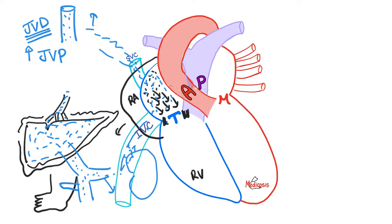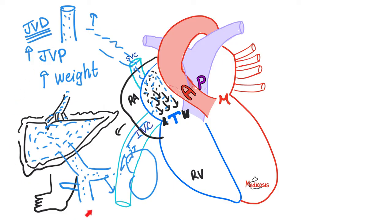Is this edema pitting or non-pitting? It's pitting because it is water — a transudate, not an exudate — and this edema is dependent on gravity. If the patient can walk, the edema will be in the ankles. But if the patient is bedridden, the edema will be presacral, just below the lower back. A good doctor should look for edema in the ankles and, if the patient is bedridden, in the presacral area as well. If the patient has swelling all over, this is called anasarca, and it increases body weight due to extracellular fluid volume overload.